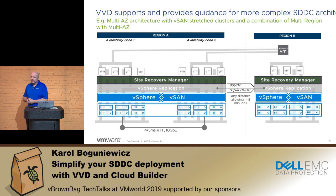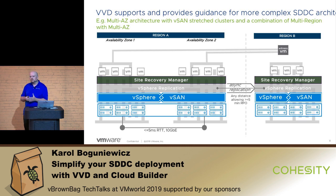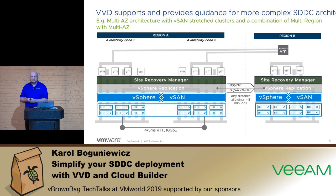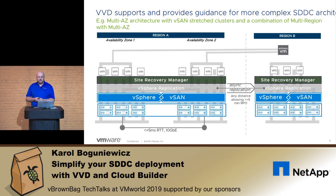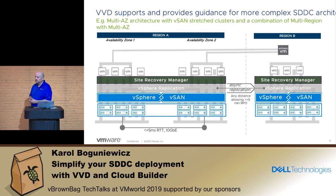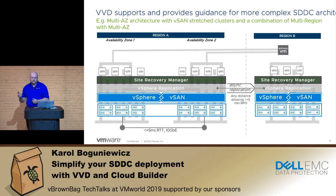It's also worth mentioning that VVD supports not only simple single-site SDDC architectures, but also much more sophisticated ones. You can have multiple regions for disaster recovery between them. If you'd like to achieve maximum availability in case of a full site failure, you can use the multiple availability zones deployment, which leverages vSAN stretch clusters for maximum protection. You can also combine these topologies — what you see on this diagram is a combination of multi-AZ with stretch clusters in one region, combined with disaster recovery to a second region.